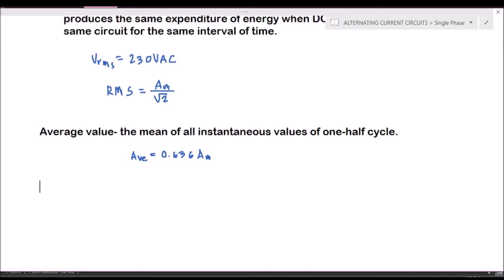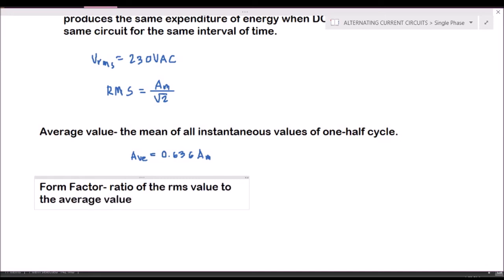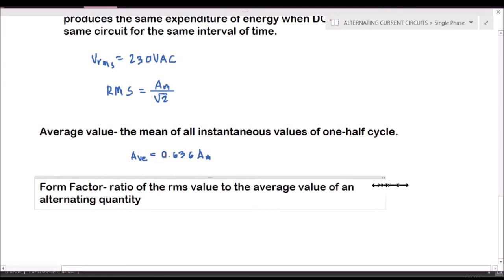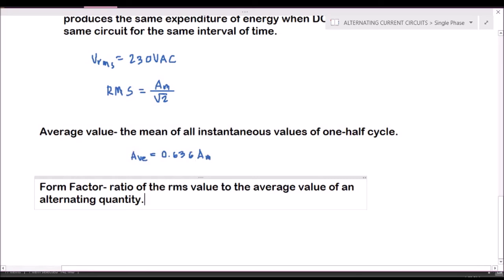Now we go to form factor. The form factor is the ratio of the RMS value to the average value of an alternating quantity. Using the formula for RMS value and the formula for average value, the form factor FF is equal to RMS divided by AVE.